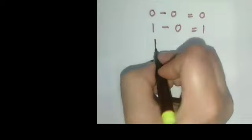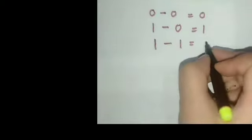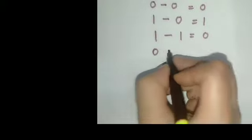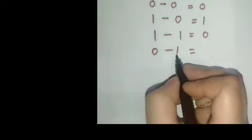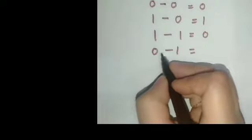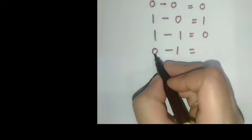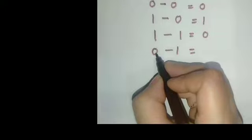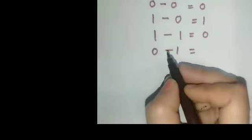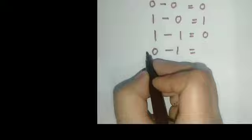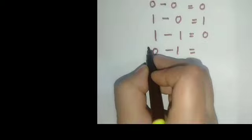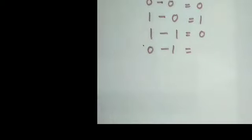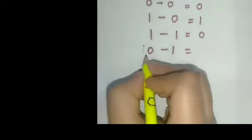1 minus 1 equals 0. And 0 minus 1: if we want to subtract 1 from 0, you can see here it's 0, so 1 can't be subtracted from 0. We have to take a borrow. After taking 1 borrow, it will become 10. I'll use the pencil to show you — it will be 10.